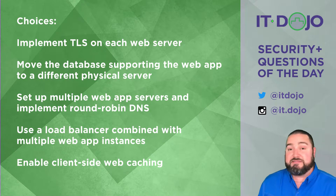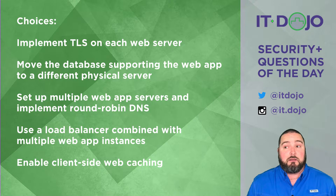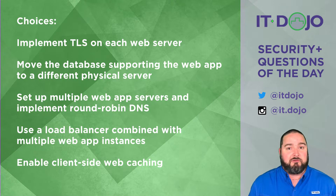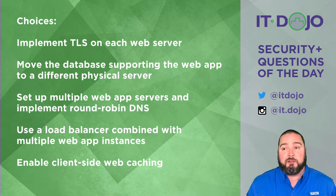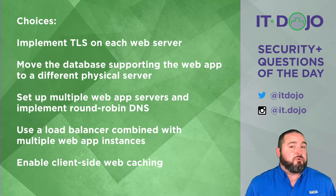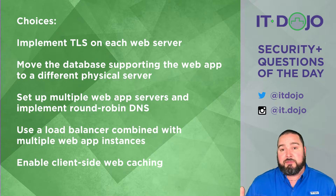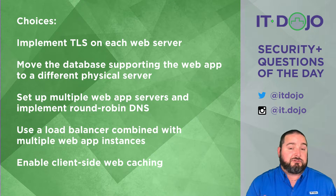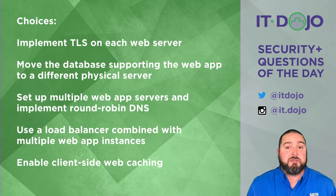Choice number one says you should implement TLS. No — that's going to make connections confidential; the data will be secret as it passes back and forth, but it's not going to do anything to help with the reliability and availability of the web app. Option number two says move the database that supports the web app to a different physical server. While that may be a common thing to do and could improve performance and potentially security, it's not going to do anything to help you with the availability of the resources.